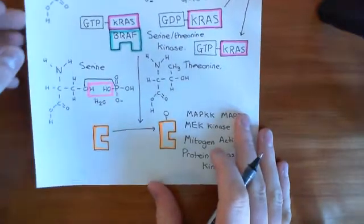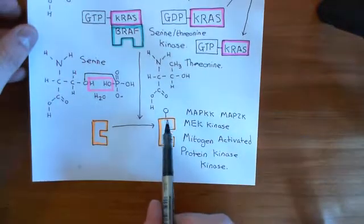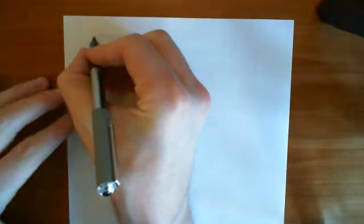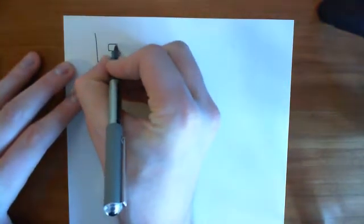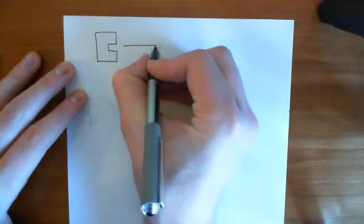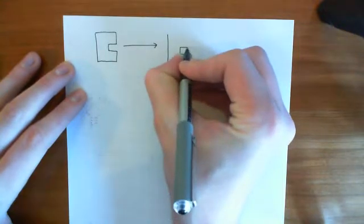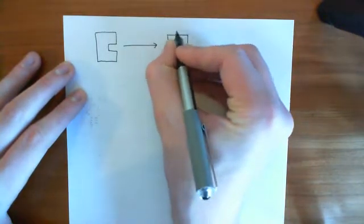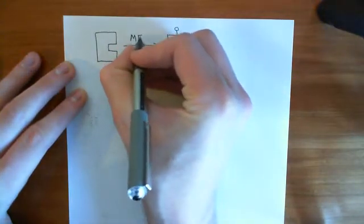So far we've got to the phase where the MEK kinase enzyme has been phosphorylated and it is now an active serine-threonine kinase. What's going to happen is that MEK is going to phosphorylate another enzyme and activate it. This reaction is catalyzed by MEK.